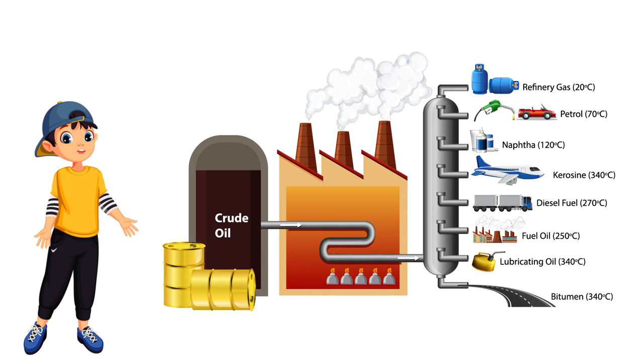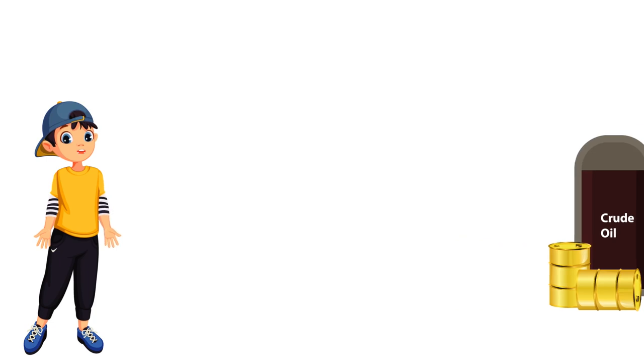Crude oil is usually black or dark brown, but can also be yellowish, reddish, tan, or even greenish.